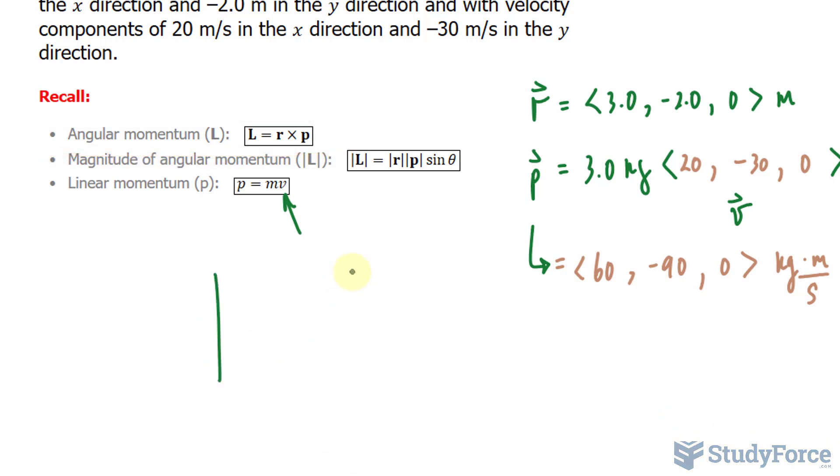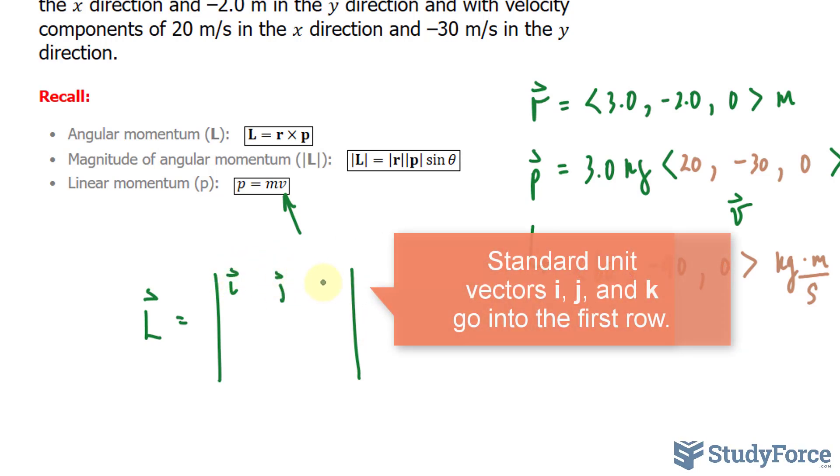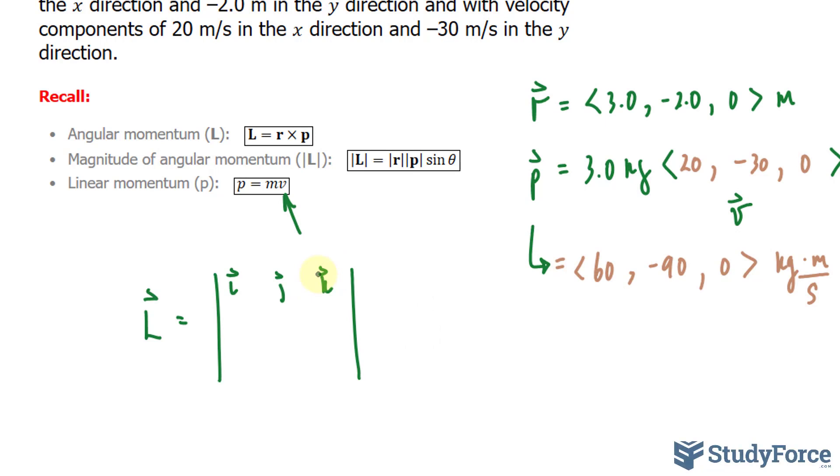How do we produce that 3 by 3 matrix? I'll write down the components for the angular momentum L. In the first row: i, j, and k, which are the components for x through z respectively. Notice we use the unit vector k to represent z components. The next row will be r with components 3, negative 2, and 0. The components for p go in the third row: 60, negative 90, and 0.